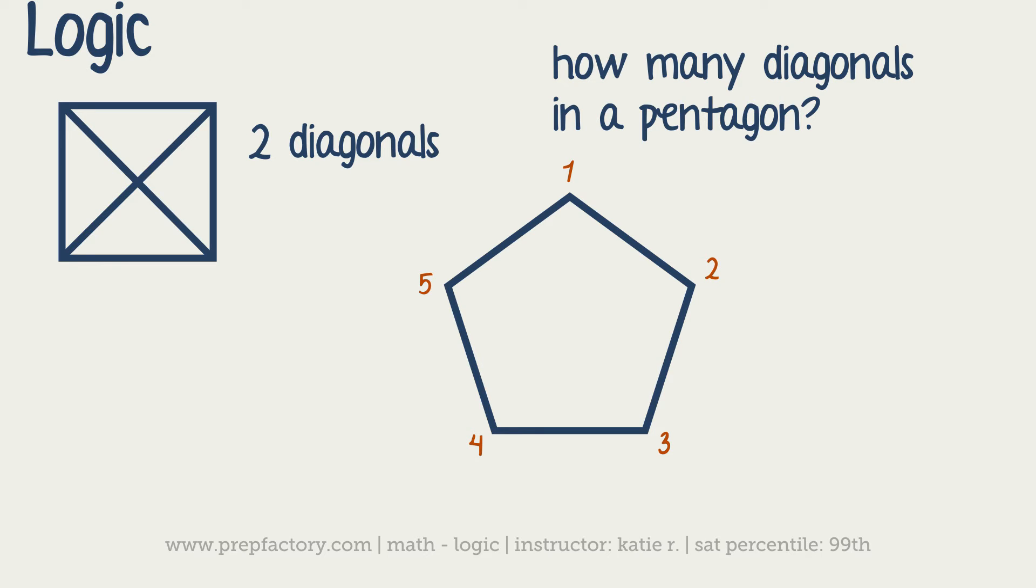We're going to start at point one. It shows us that a diagonal is just going to go across to any point it can without lying across the line that's part of the outside. So one can go to four and one can also go to three - so far we have two diagonals. Then we can look at two. Two can go over to five and two can also go to four, so now we've got two additional diagonals.